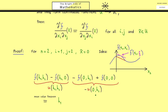Applying the ordinary mean value theorem to this one-dimensional function gives us h1 times the partial derivative of u with respect to x1, more correctly written as ∂u/∂x1, evaluated at an intermediate point we call ξ1 in the first variable while h2 is unchanged. This is our result after applying the mean value theorem in the x1 direction.